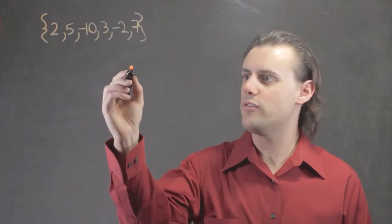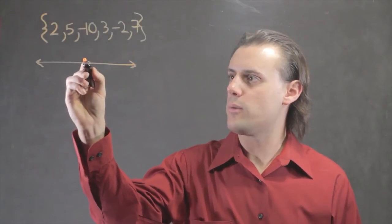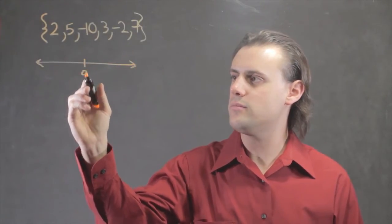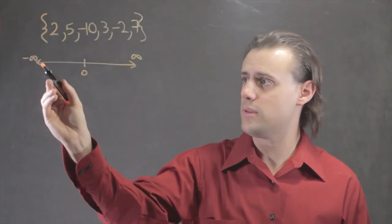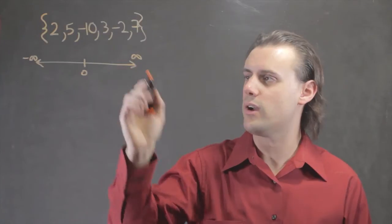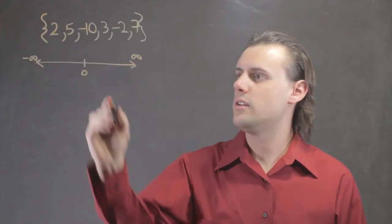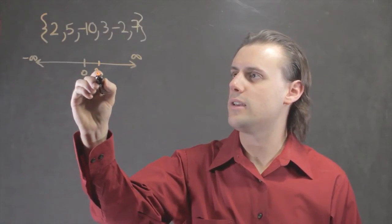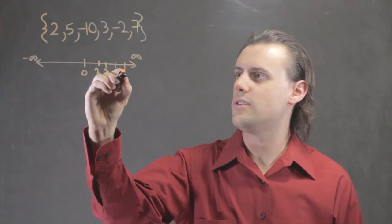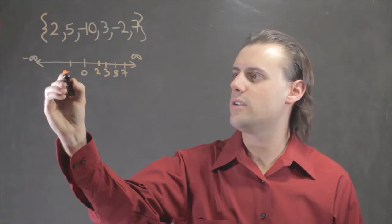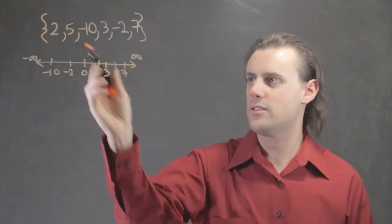When we say this is unordered, we examine the real number line, where we place 0 at the center and the number line extends from negative infinity to positive infinity. Because we typically read from left to right, we can place these numbers on the number line: 2, 3, 5, and 7 on the positive side, and negative 2 and negative 10 on the negative side.